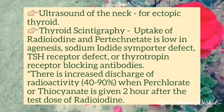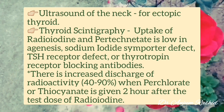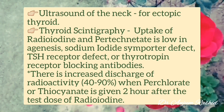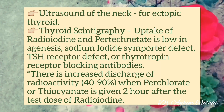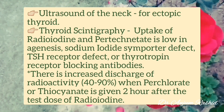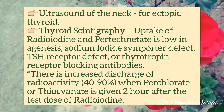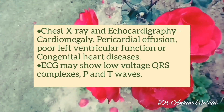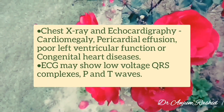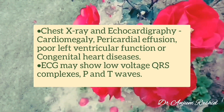Ultrasound of the neck is required in cases of ectopic thyroid gland. On thyroid scintigraphy, uptake of radioiodine and pertechnetate is low in agenesis, sodium-iodide symporter defect, TSH receptor defect, or thyrotropin receptor-blocking antibodies. There is increased discharge of radioactivity when perchlorate or thiocyanate is given two hours after the dose of radioiodine. Chest X-ray and echocardiography may show cardiomegaly, pericardial effusion, poor left ventricular function, or congenital heart disease.